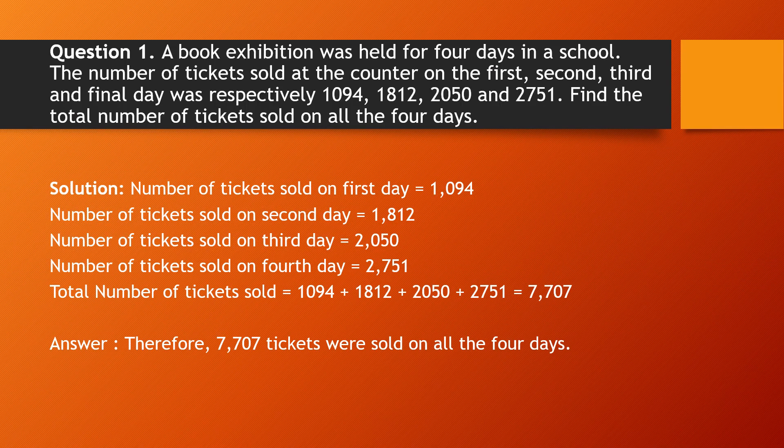Question number one: A book exhibition was held for four days in a school. The number of tickets sold at the counter on the first, second, third, and final day were respectively 1094, 1812, 2050, and 2751. Find the total number of tickets sold on all four days.